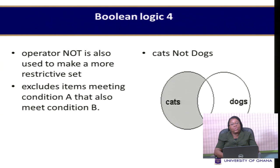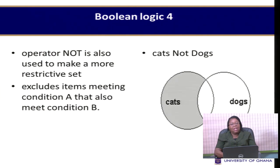The NOT operator excludes certain items. For instance, 'cats NOT dogs' retrieves only information on cats, excluding any results that include dogs—even those in the intersection. Boolean logic is best represented with the Venn diagram.